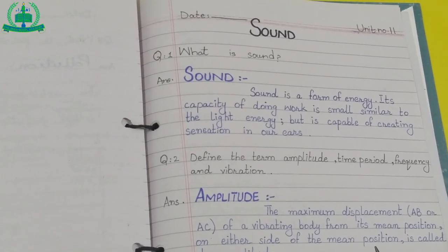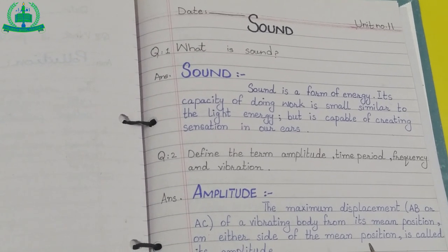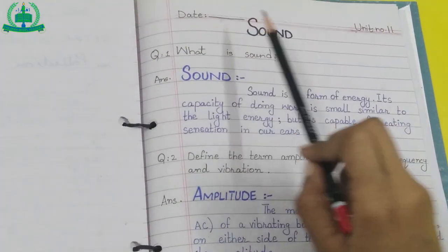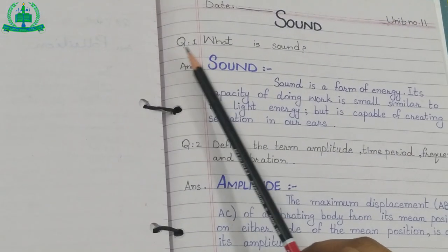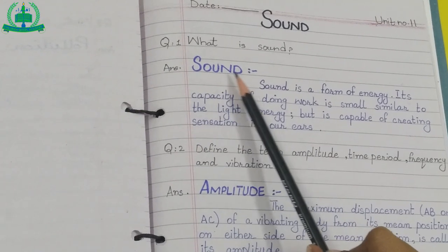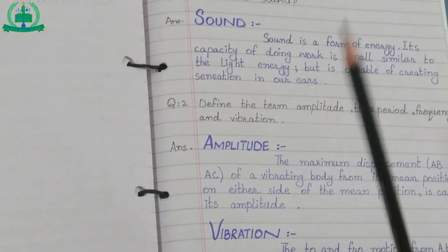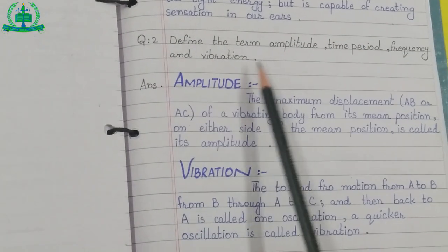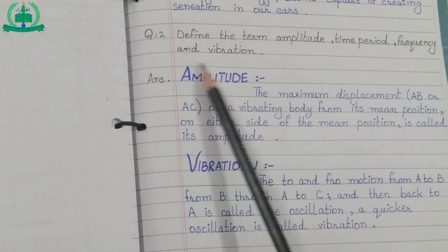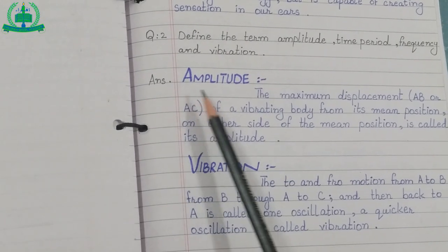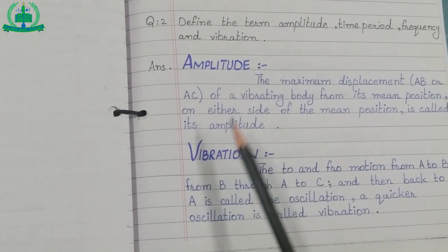I have already explained these topics. Now I am giving your homework — mention the date, unit name: Sound, unit number 11. Question number one: what is sound? Write the heading 'Sound.' Question number two: define the terms amplitude, time period, frequency, and vibration. Write the headings: amplitude, vibration.